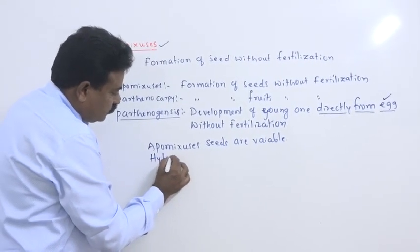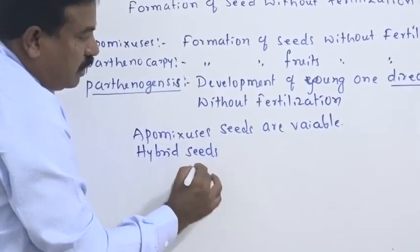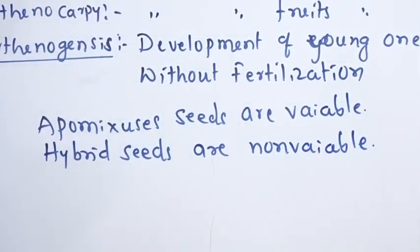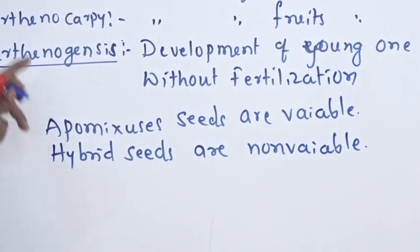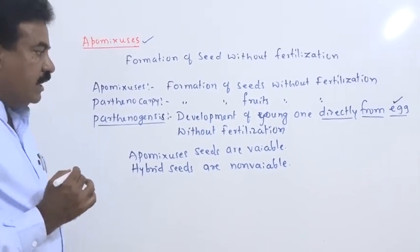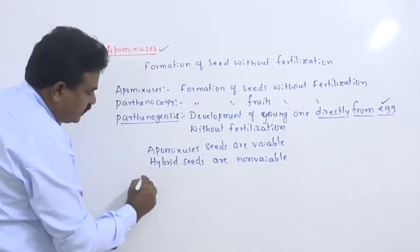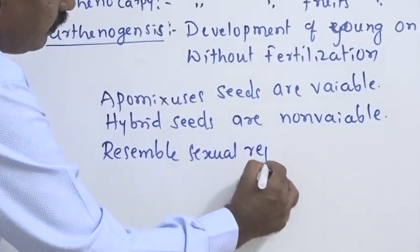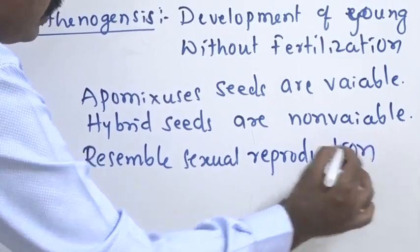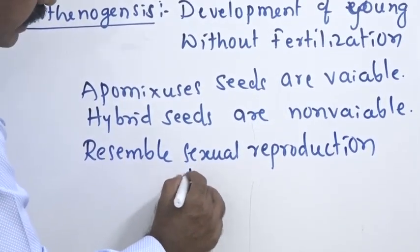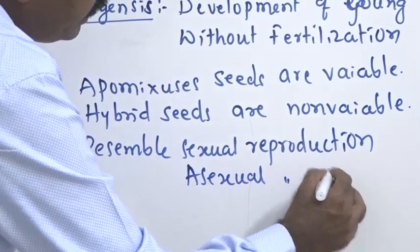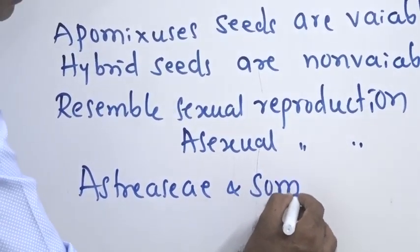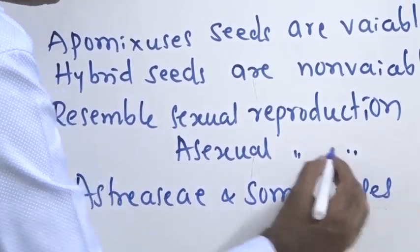You know, the hybrid seeds we developed are non-viable. That means they lost the capacity of germination. But apomixis seeds are viable. Hence, they have greater importance in the field of agriculture. Then apomixis process, they resemble a sexual reproduction or they mimic exactly the sexual reproduction. But it is especially a mode of asexual reproduction. Mainly, we see in the family of Asteraceae as well as some grasses. They are showing the process of apomixis.